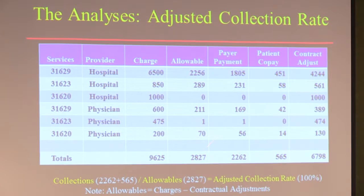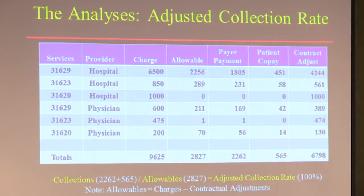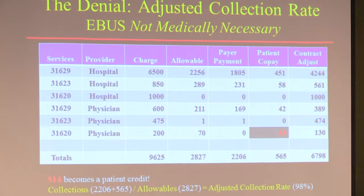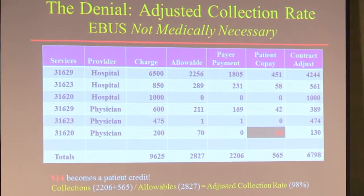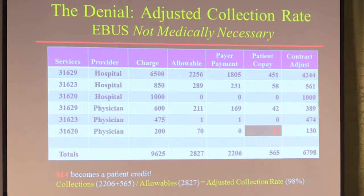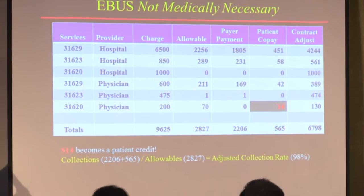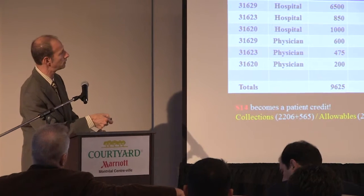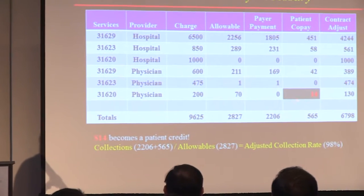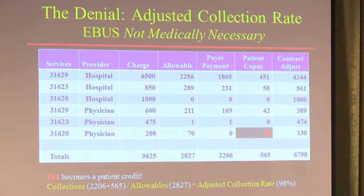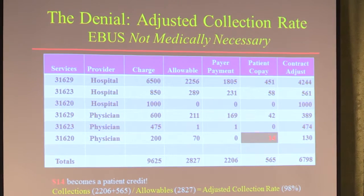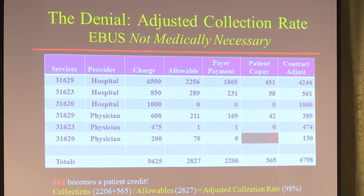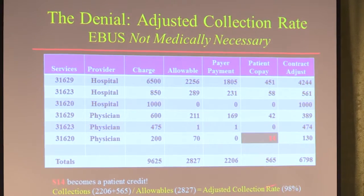The real metric you need to look at is the adjusted collection rate — the rate of dollars you're supposed to be paid, and how good you are at collecting those. The $2,262 is what the payer pays you, and you got all $565 from the patient, so your adjusted collection rate is 100%. That's what you'd like to see. Now what happens if a service is deemed not medically necessary? When endobronchial ultrasound first came out, many payers said they're not going to pay a penny because it's not medically necessary — it's still experimental. In that case, you've already collected patient co-pays, so you have to pay the patient back $14 you inappropriately collected.